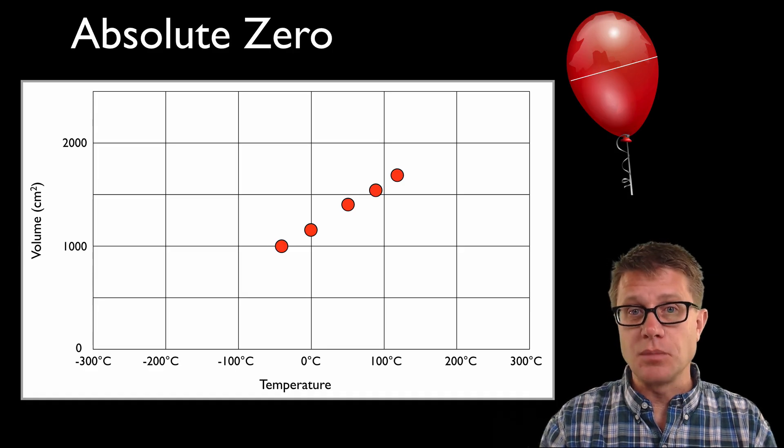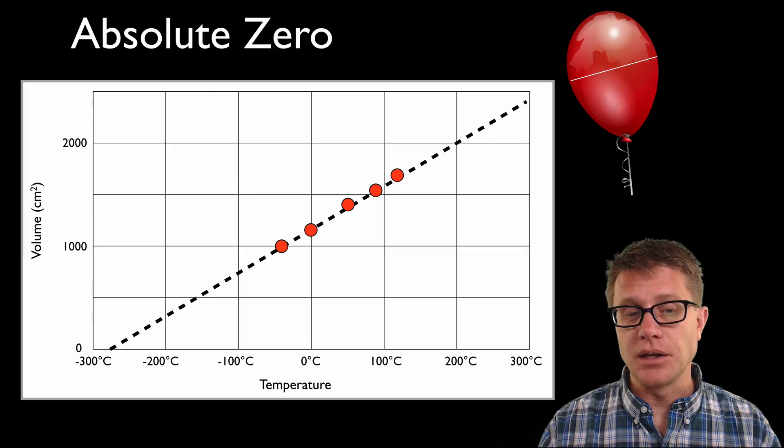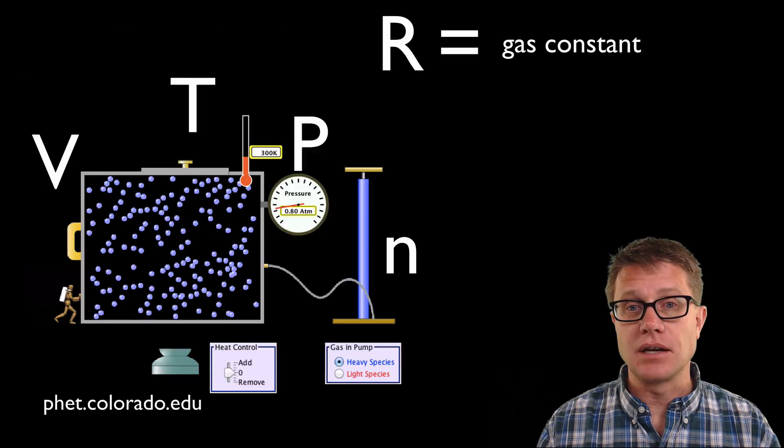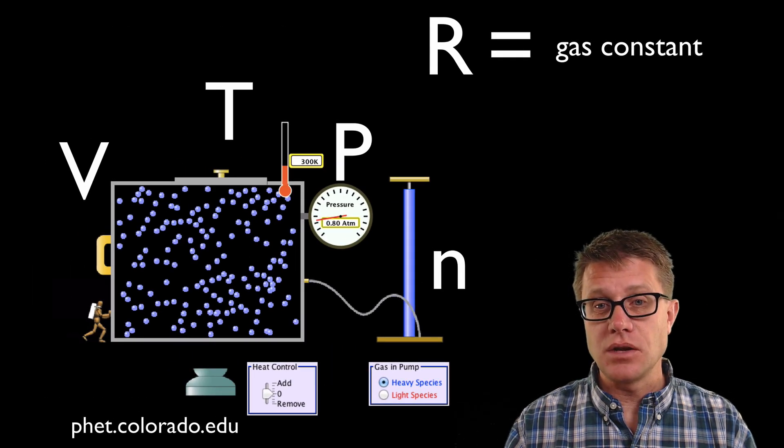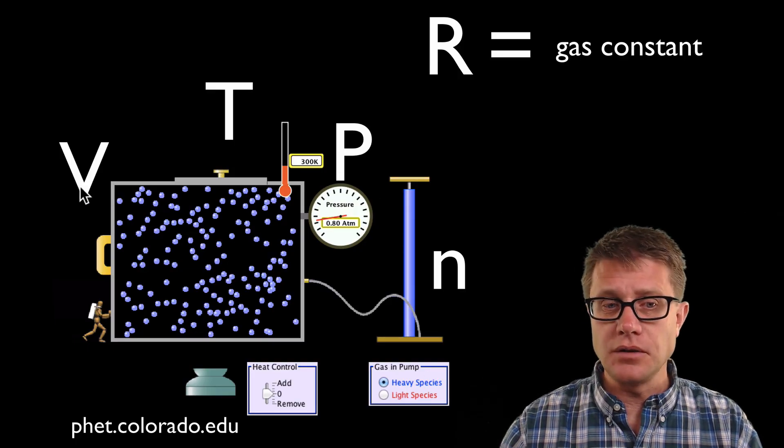When it is colder it is going to be smaller. When it is warmer it is going to start to expand. What you can do is you can extrapolate from that. If you play it backwards, what would its temperature be when the volume is zero? It is going to be absolute zero, around negative 273. And so we are going to use a PHET simulation to do this.